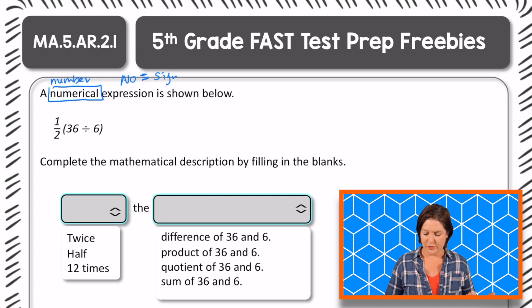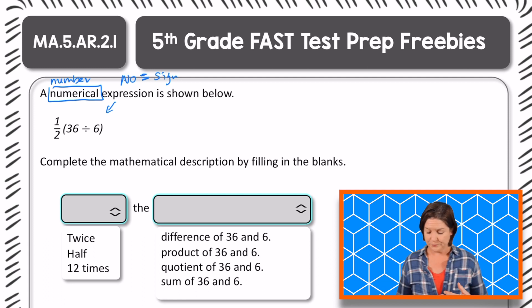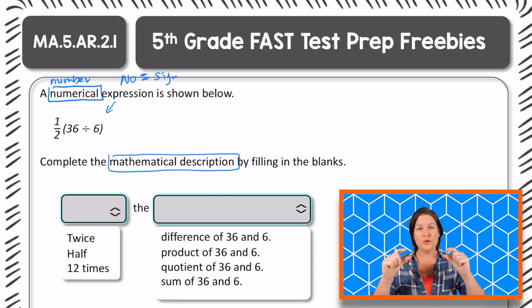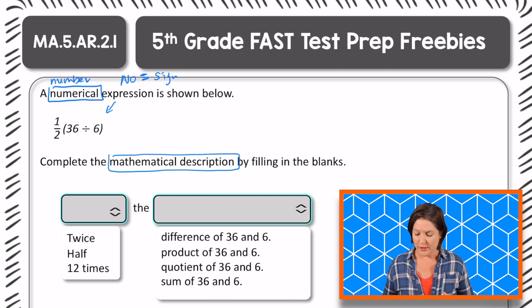Okay, right down there. There's no equal sign. A numerical expression of an expression with numbers is shown below. So we see one half and then inside of parentheses, 36 divided by six. Complete the mathematical description. So this is turning that numerical expression into words, using a mathematical description by filling in the blanks.